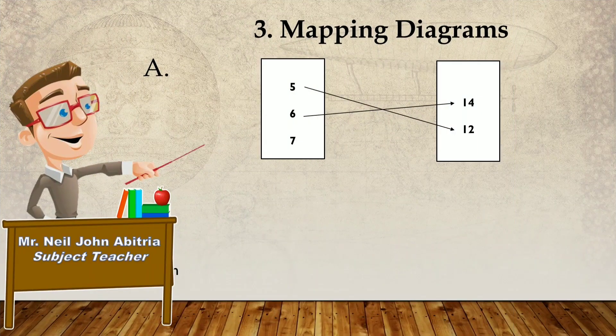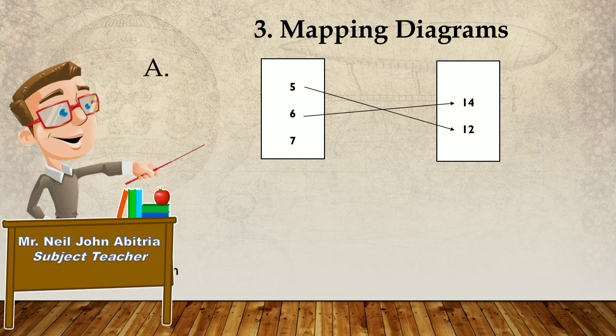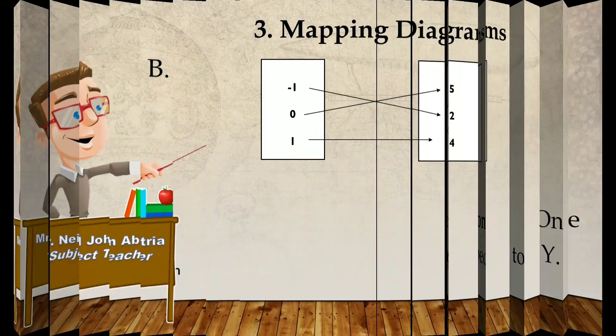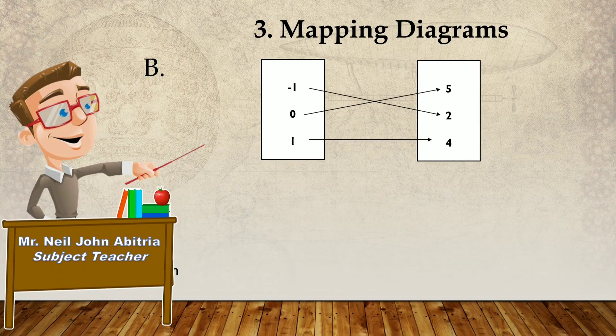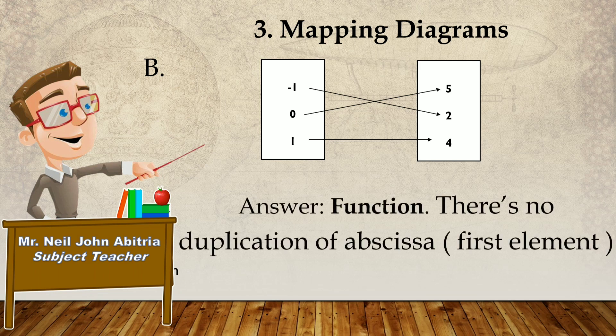And let's figure out mapping diagrams. Letter A. Do you think, is it a mere relation or a function? Very good. The answer is mere relation. Because one element in X is not mapped to Y. How about this? Is it a mere relation or a function? Very good. This is a function. Because there is no duplication of abscissa or the first element.